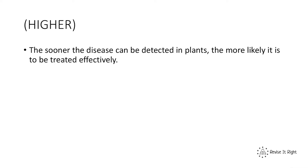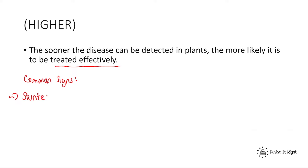This next section is for higher tier only, so foundation students do not need to watch this part. It's important that the sooner a disease can be detected in plants, the more likely it is to be treated effectively. Therefore we need to be able to identify the common signs of plant disease. One sign we've talked about a lot already is stunted growth — if your plants show stunted growth, that is a sign of some form of plant disease.